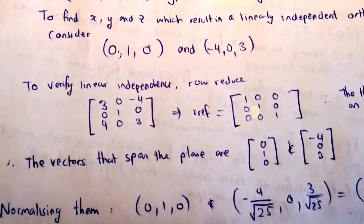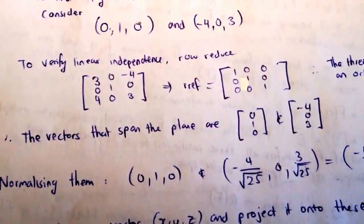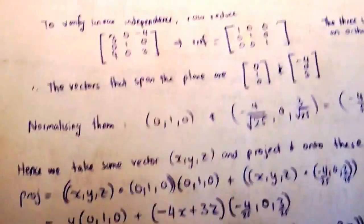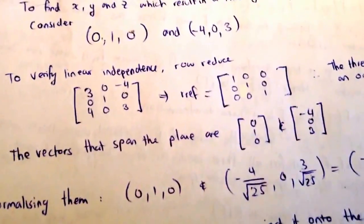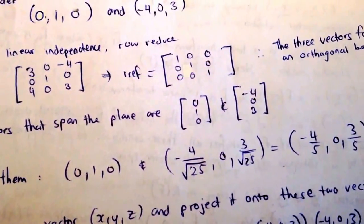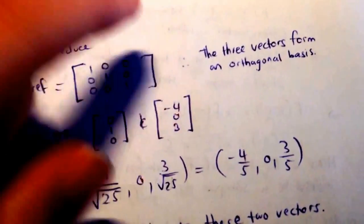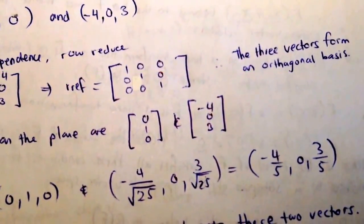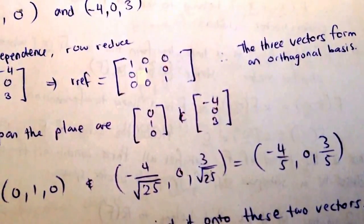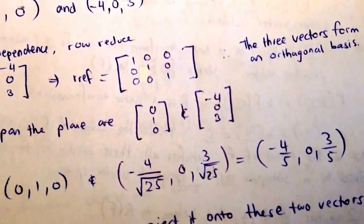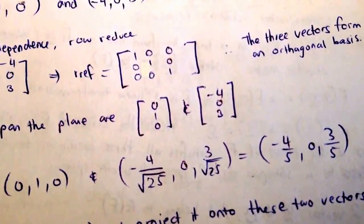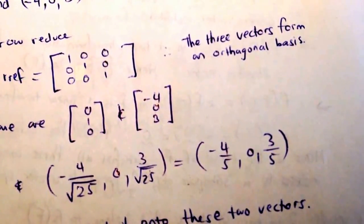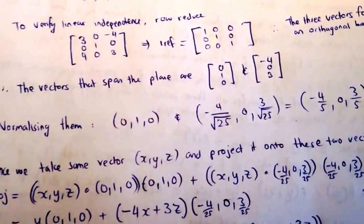The vectors that span the plane are those two. We want to normalize them to get an orthonormal basis, and the reason for that is just so we've got it in the nicest form. The first one doesn't actually need normalizing because it already has length 1, so it's just going to remain the same. The other one, we square the components here. So 4 squared plus 3 squared, that's going to be 25 total. So it's going to be divided by the square root of 25, because we divide by the magnitude, because we want a vector that has length 1. What we end up with is negative 4 on 5, 0, 3 on 5, because the square root of 25 is just 5.